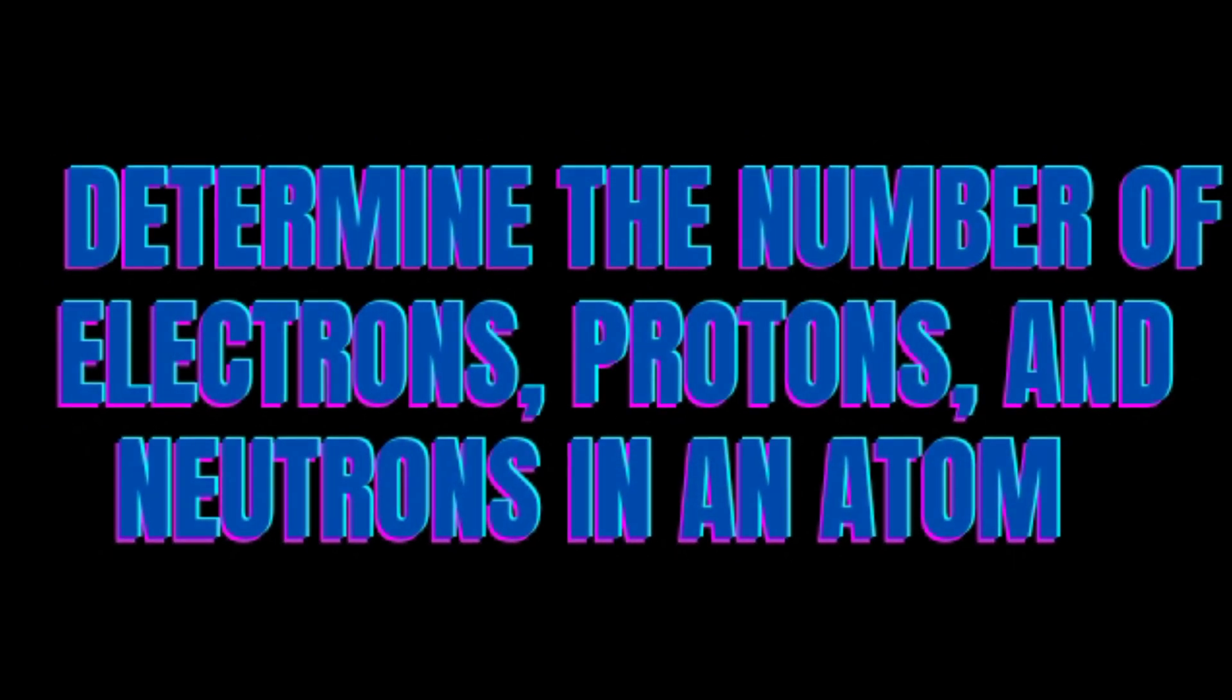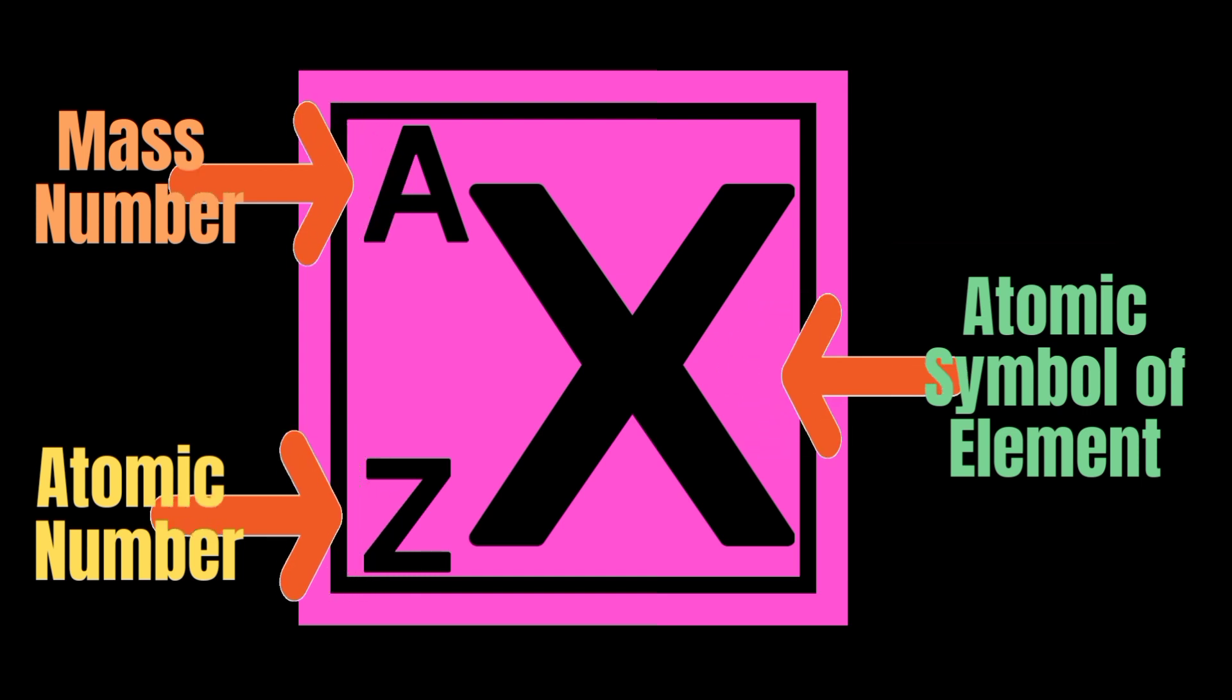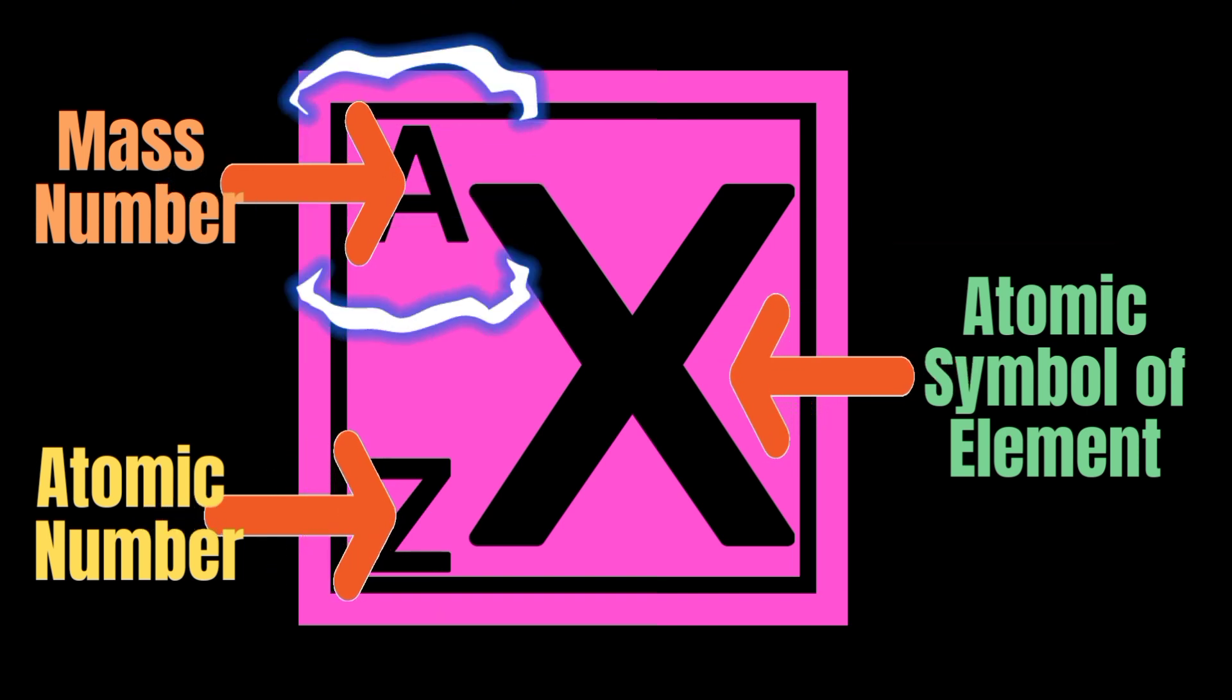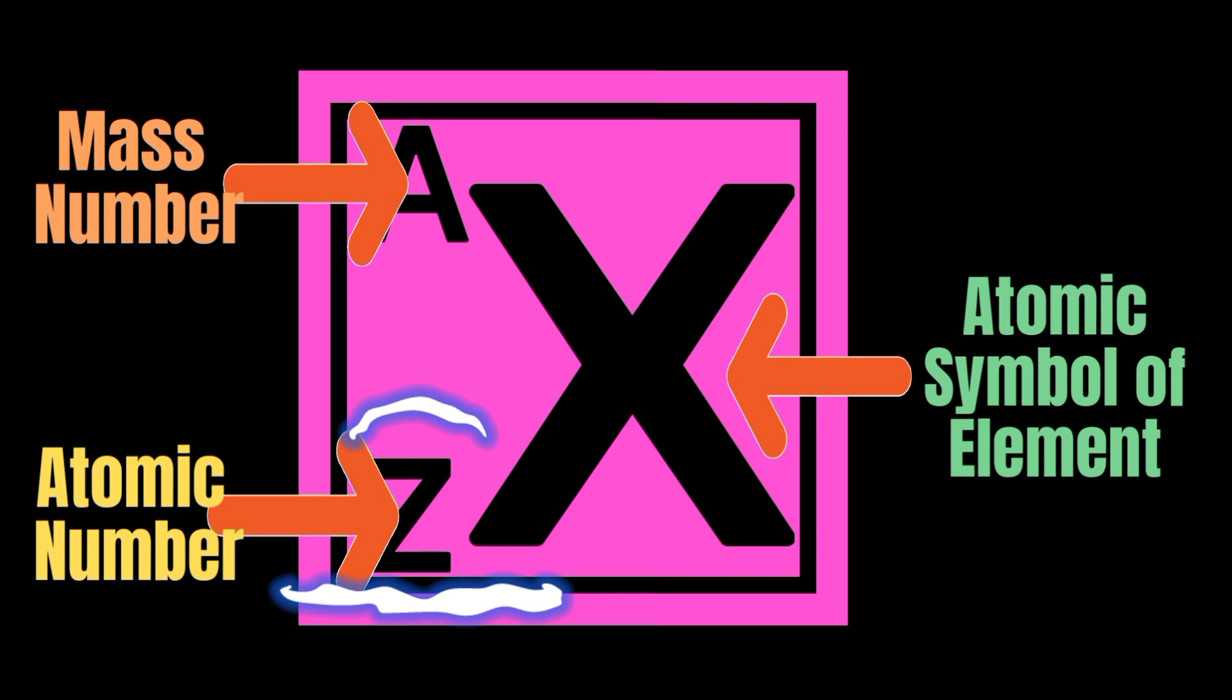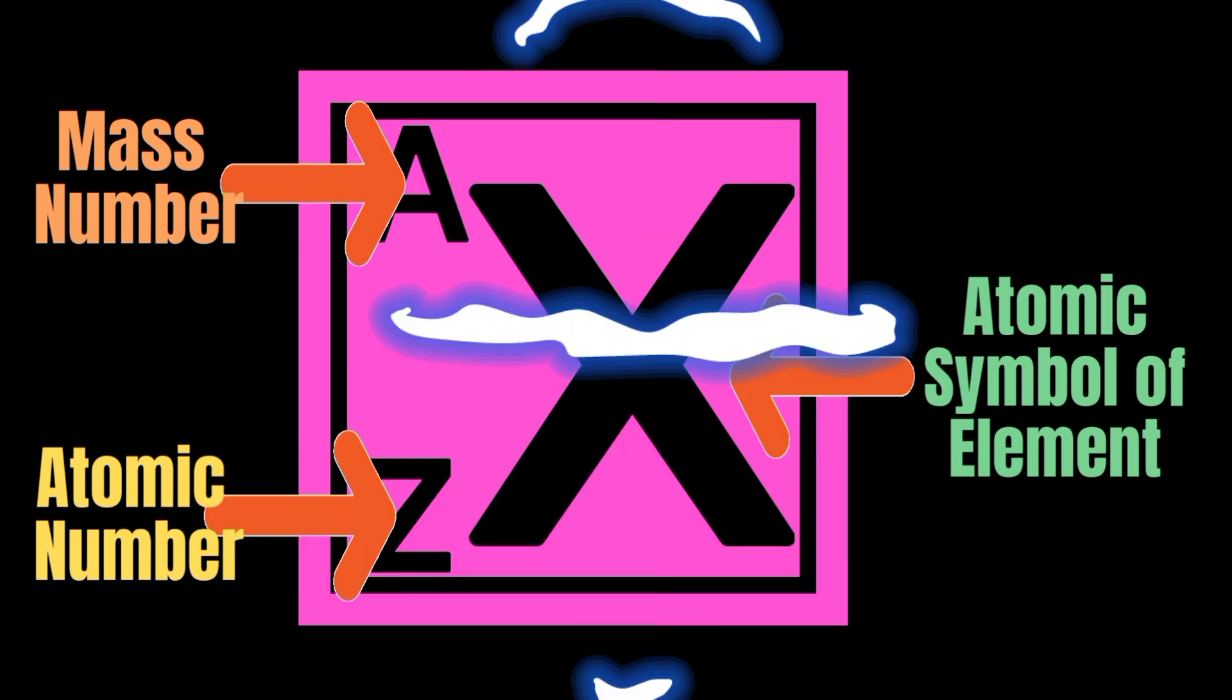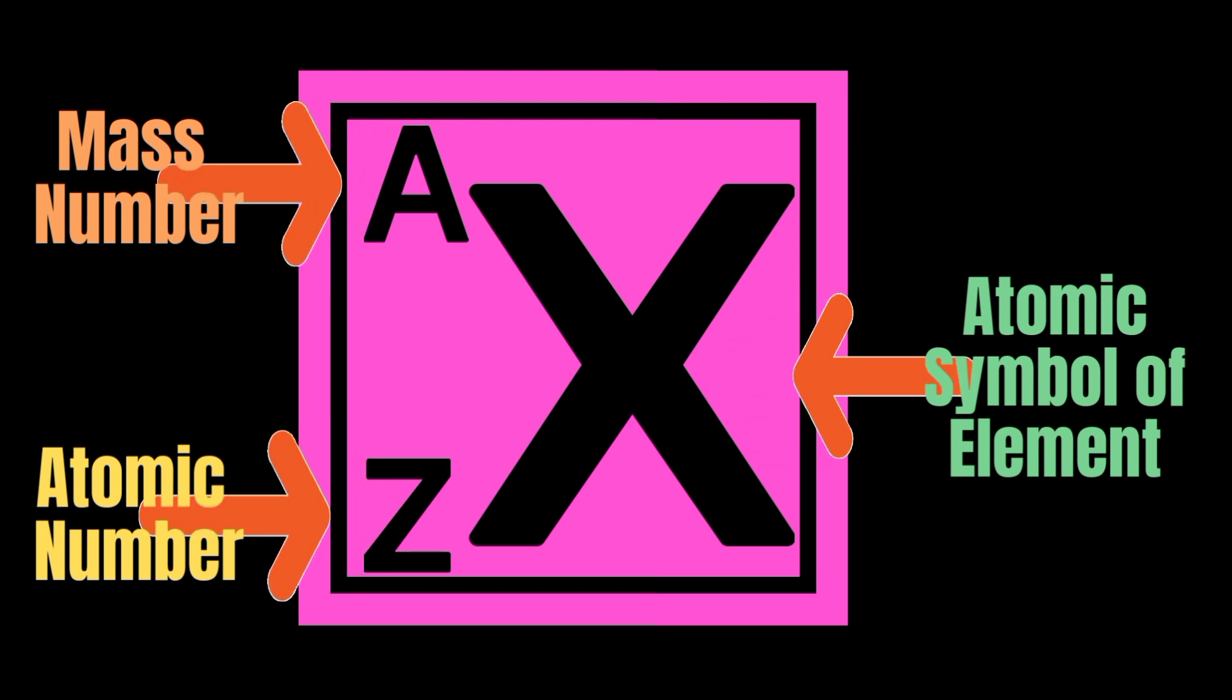Let's determine the number of protons, electrons, and neutrons in an atom. Elements are given letter symbols including their atomic number and mass. The mass number, or capital letter A, is written on the upper portion beside the symbol X. While the atomic number, capital letter Z, is written below the mass number. This figure is an atomic symbol with its atomic number and mass. X, the atomic symbol of element, A, mass number, and Z, atomic number.